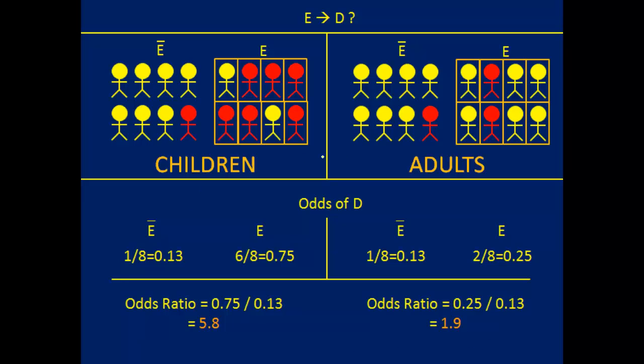When you have this kind of situation where the association between your exposure and your disease is very different within the levels of the variable on which you are stratifying, we call this effect modification. Here we have effect modification by age. Our variable is age, coded as a binary variable — adult or child — those are the two levels. What we would say is that age is modifying the effect of the exposure on the disease. The magnitude of the association between exposure and disease is different among children compared to adults. That's effect modification by age.